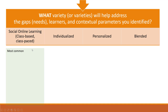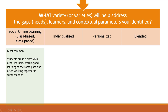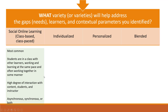Social online learning is actually the most common type of online learning that is designed and delivered, even though you may hear other terms used. Under social online learning, students are in a class with other learners and they are working at the same pace, often working together in some manner. There's a high degree of interaction with the content, with other students, and with the instructor. This can be asynchronous, synchronous, or some mix of both.